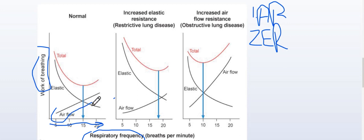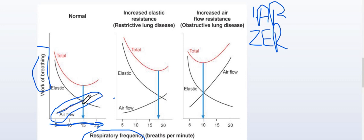This curve represents the airflow resistance. As we move along the x-axis — meaning the respiratory rate is increasing and tidal volume is decreasing — the airflow resistance is comparatively increasing.